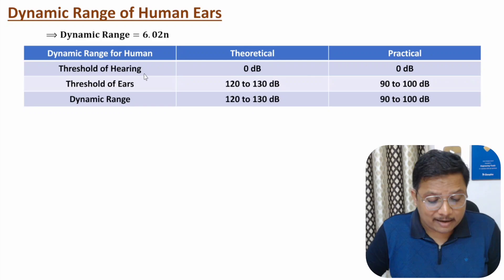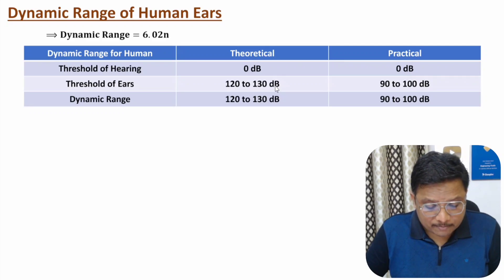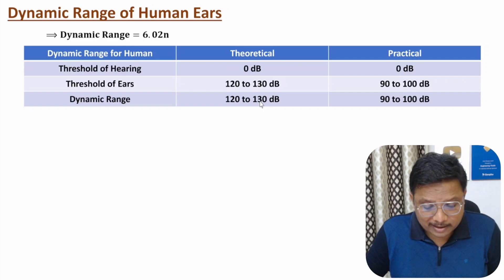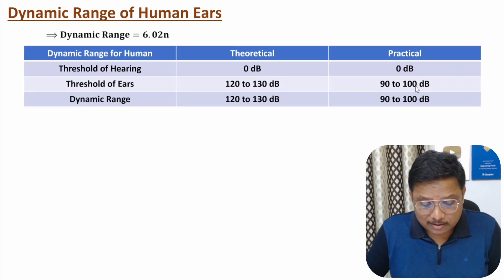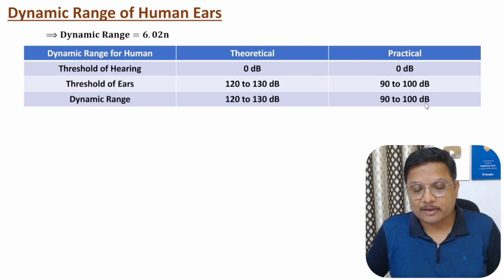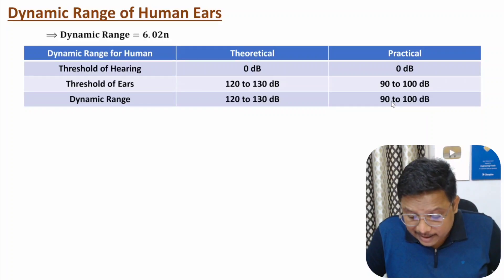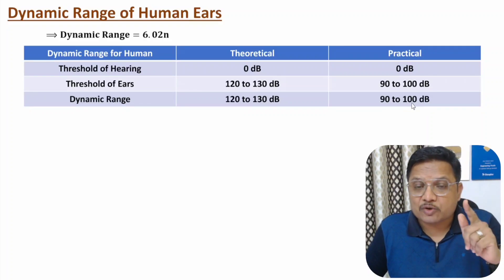If you talk about human ears, theoretically the threshold of hearing is 0 dB and the threshold of pain is from 120 to 130 dB, so the theoretical dynamic range is 120 to 130 dB. But practically, the threshold of hearing is 0 dB and the threshold of pain is 90 to 100 dB, so the practical dynamic range of human ears is 90 to 100 dB.